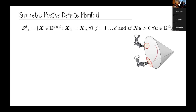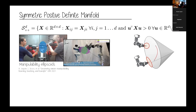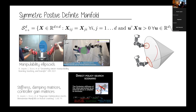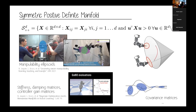Perhaps less familiar is the cone of symmetric positive definite matrices, meaning the set of matrices whose eigenvalues are greater than zero. Examples include manipulability ellipsoids — there are approaches to learn or define controllers on the space of SPD matrices. We have also used this manifold representation to tune control gains like stiffness or damping matrices. Covariance matrices of Gaussians can also be identified by this manifold.